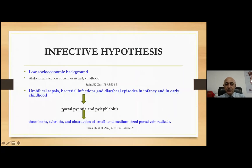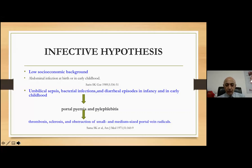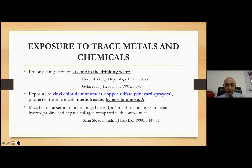The infective hypothesis typically occurs in poor countries, in which umbilical sepsis is an important component. The umbilical vein retrogradely drains into the left part of the portal vein. So during childbirth when the cord is severed from the placenta, if hygienic conditions are not maintained, there is retrograde spread of infection from the vitelline duct to the left portal vein, leading to portal pylephlebitis resulting in thrombosis, sclerosis, and obstruction of various parts of the portal venous system.